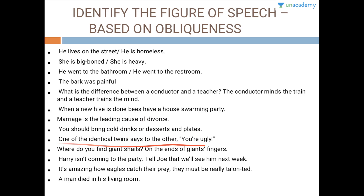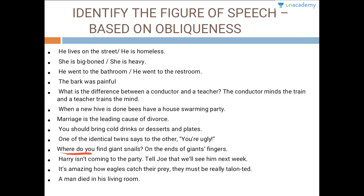One of the identical twins said to the other, 'you are ugly' — this is an example of irony because both identical twins have the same face, so how can one be ugly? They both have to be ugly or they both have to be pretty. Where do you find a giant snail? On the end of a giant finger — this is again an example of pun.